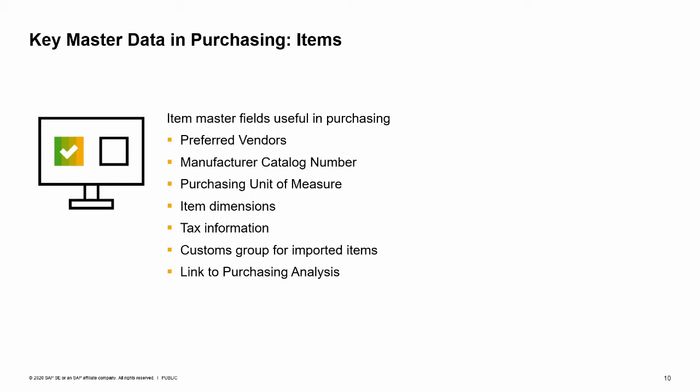The purchasing data tab indicates the usual vendors who sell the item, how to identify the item in a catalog, the units of measurement used for the item for purchasing purposes, and the dimensions of the physical item.